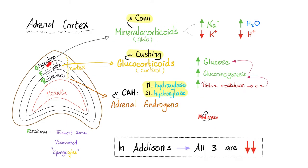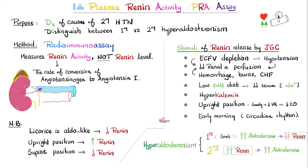If a tumor in the adrenal cortex secretes too much aldosterone, this is called Conn syndrome or primary hyperaldosteronism. But if the problem starts in the kidney — for example, a kidney tumor secreting too much renin — then renin increases angiotensin 1, which increases angiotensin 2, which increases aldosterone. Because it didn't start in the adrenal cortex, we call this secondary hyperaldosteronism. The plasma renin activity assay helps distinguish between the two.